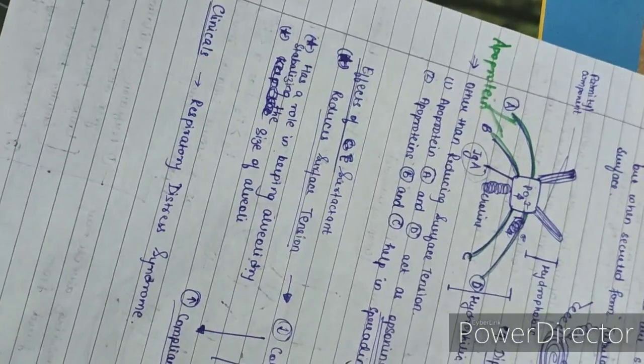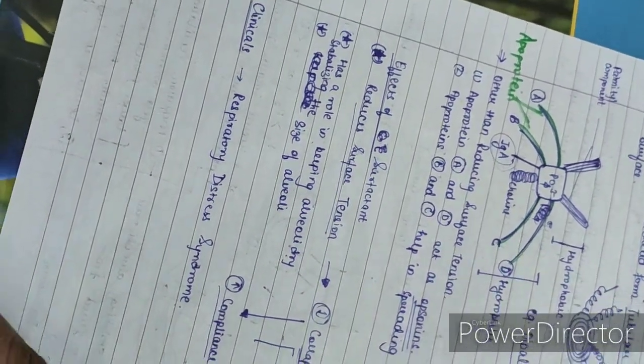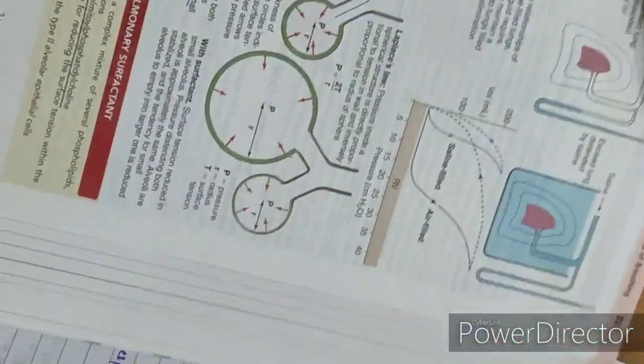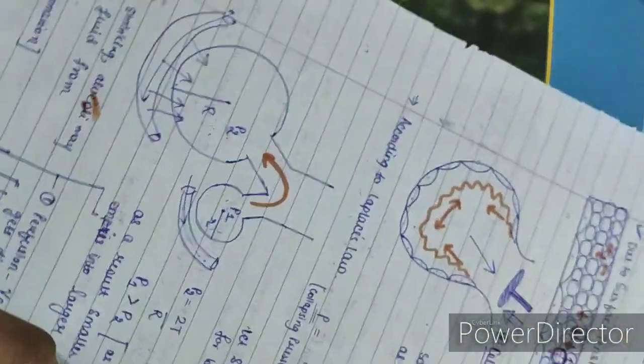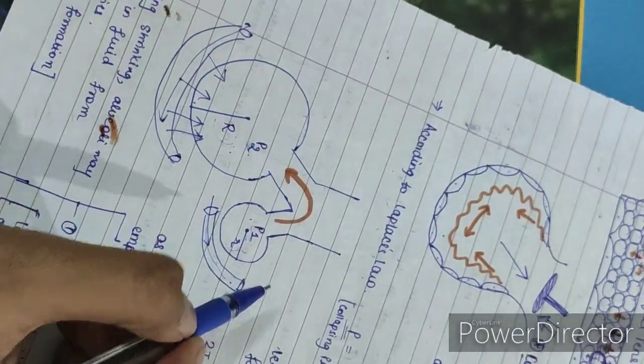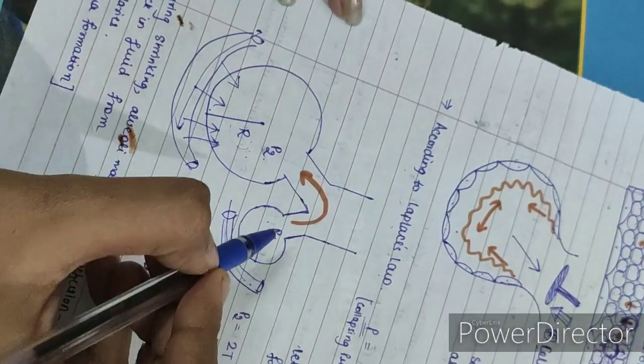Another thing is that it stabilizes the size of the alveoli. How does it stabilize the size of the alveoli? The same diagram which we were talking, which is there in the Ganong, I am going to explain now. So let amount of surfactant be same. Suppose the same surfactant comes to us. So what will happen here?